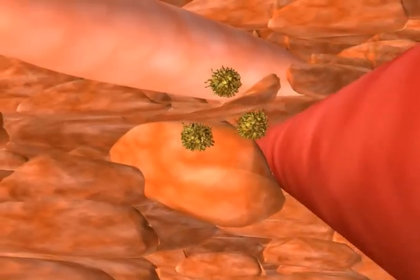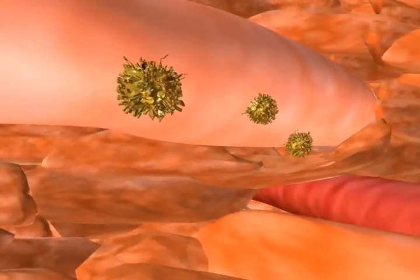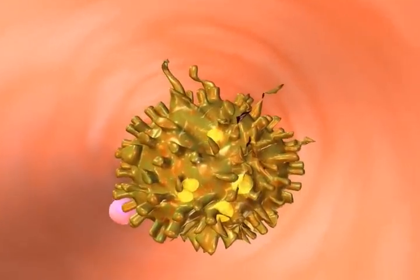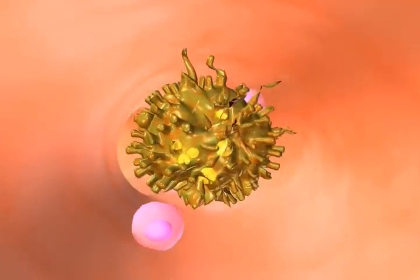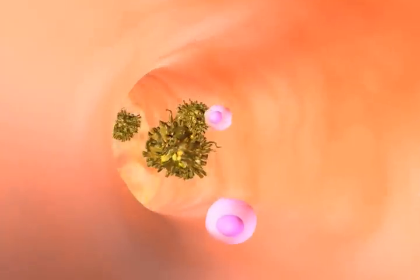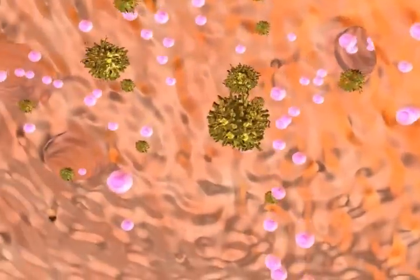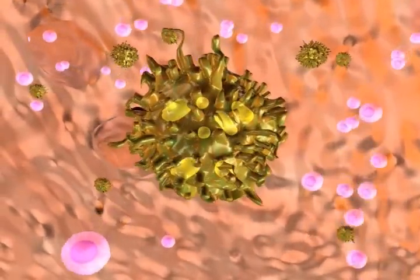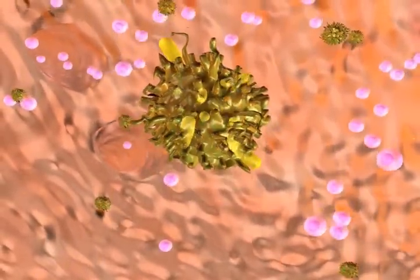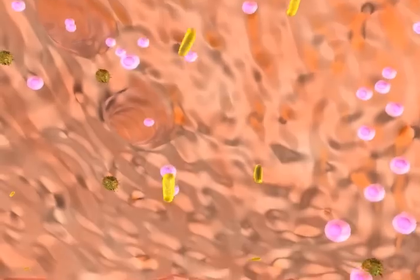However, anthrax endospores are not destroyed, but begin to germinate within the macrophage cells until they end their journey within a lymph gland. Once inside the gland, the endospores develop into vegetative bacteria known as bacilli, which are then released from the macrophage.